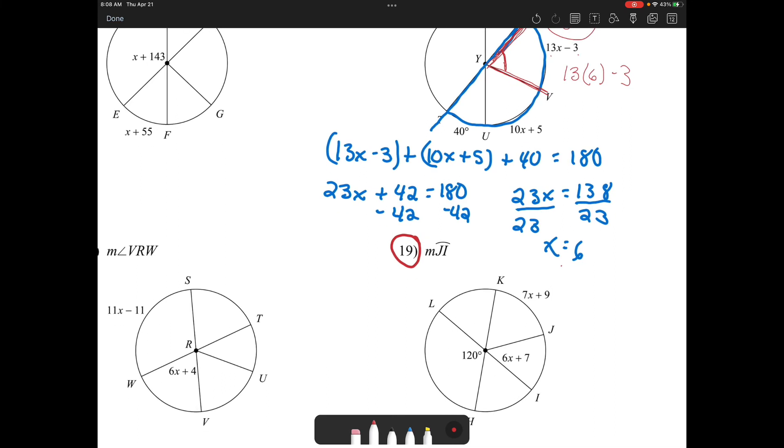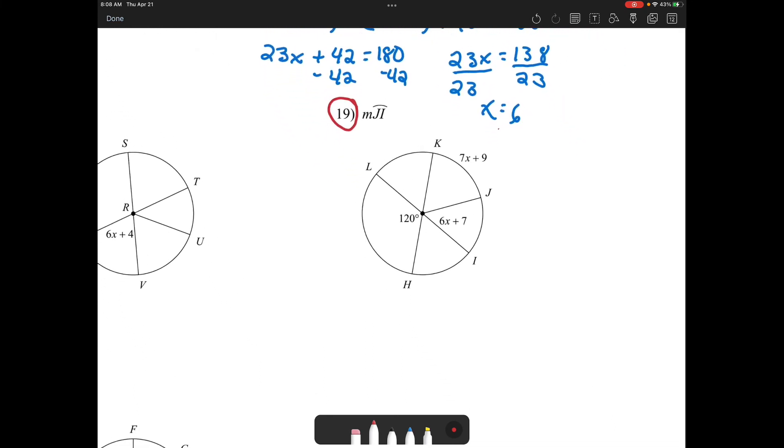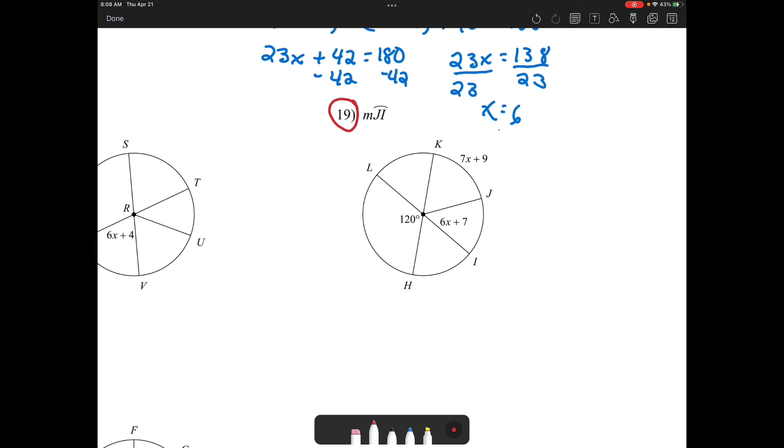So remember in these we have to go through and find the actual measurement of the angle. Let's do one more. So on this one, we're still looking for the measurement of JI, so we're looking for this angle, and we still have to find X.